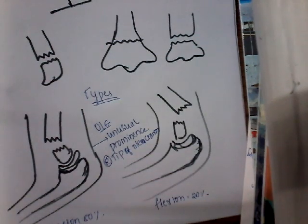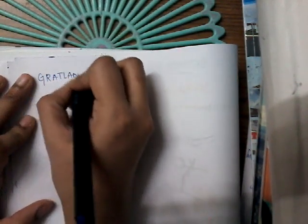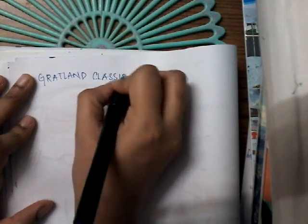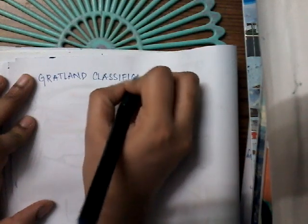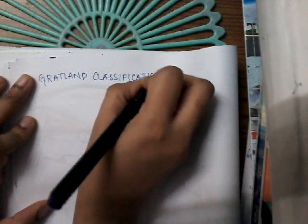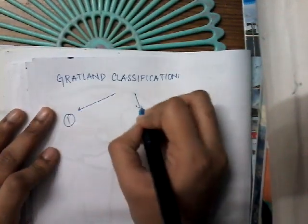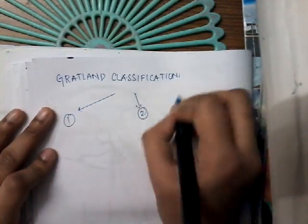There is a classification for supracondylar fracture called the Gartland classification. According to Gartland classification, supracondylar fractures are classified into three types.